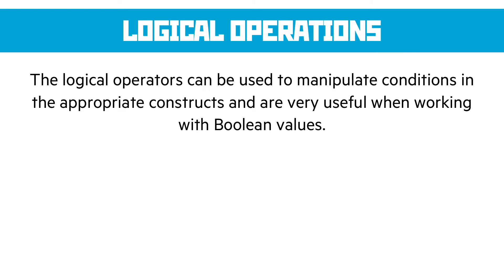In an if statement, the condition is the part in the brackets — we'd use logical operations there to combine conditions or negate them. They're also really useful when working with Boolean values because they allow us to change a Boolean value very quickly. A NOT operation inverts the Boolean output and gives you the opposite. For example, 'if NOT valid_data' — if our data is a Boolean value, this means if it's not true, in other words if it's false. It's a nice quick way of expressing that.